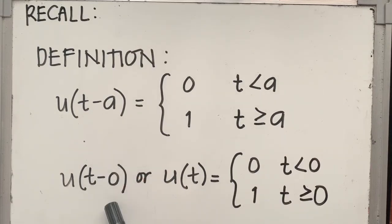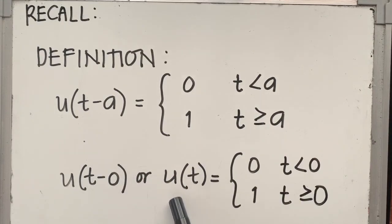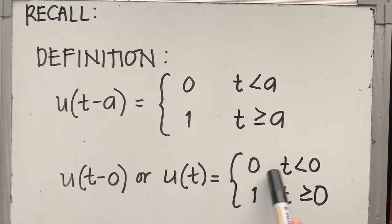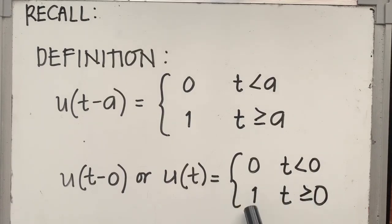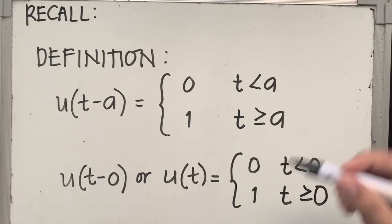Now if a is equal to 0, then it's represented by u of t, which is equal to 0 when t is less than 0, and the function is equal to 1 when t is greater than or equal to 0.